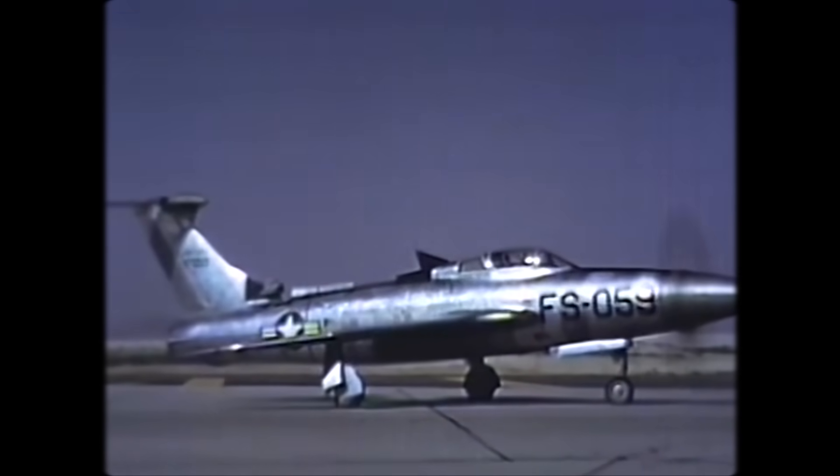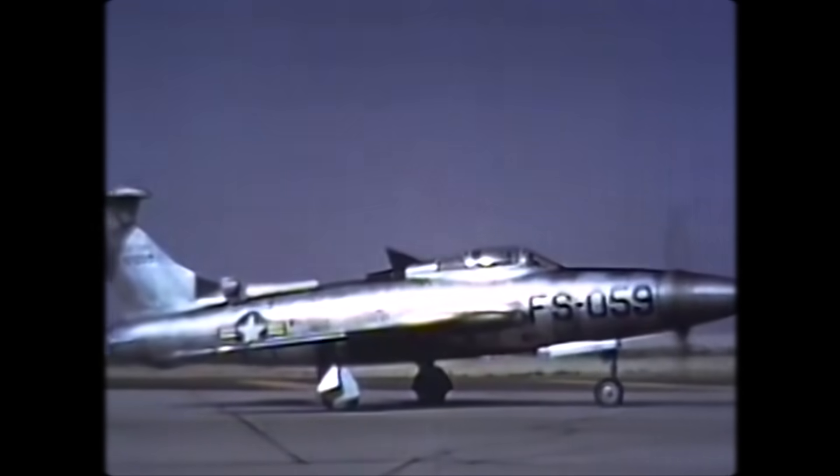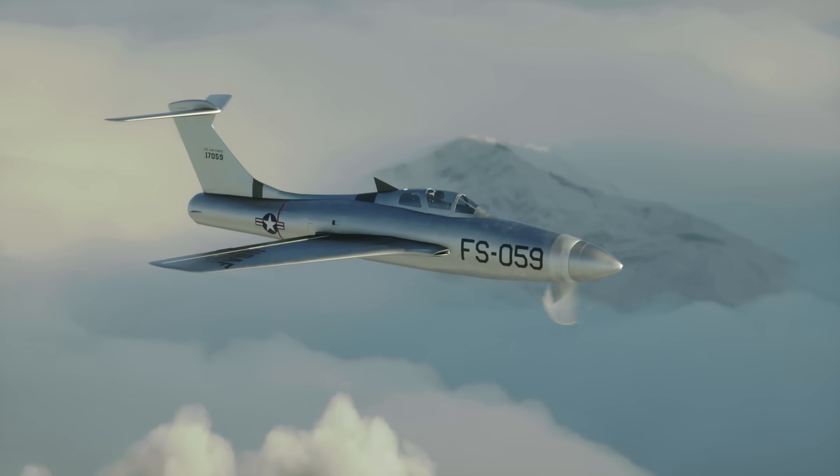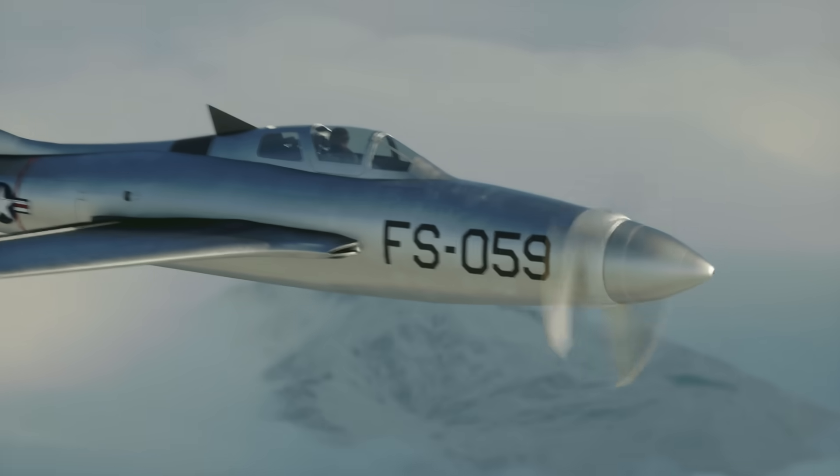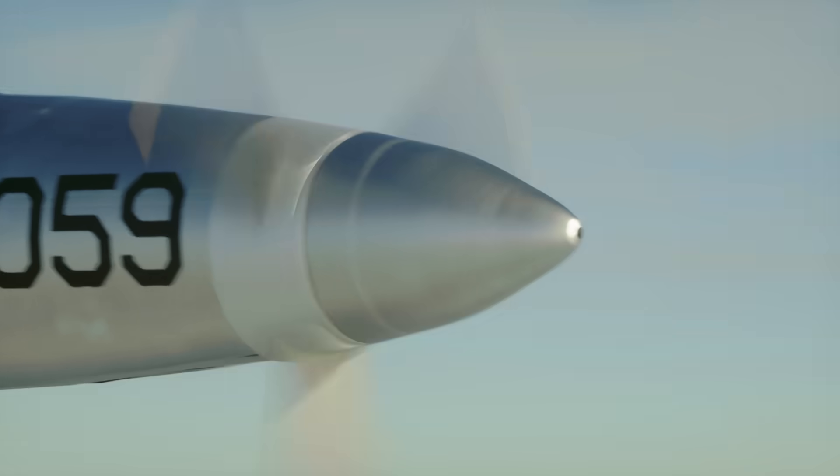Republic designed this abomination in an attempt to get the best of both worlds - great climb rate and great top speed. The Thunderscreech was a supersonic propeller design. A propeller designed to spin faster and achieve much higher top speed than a conventional propeller.